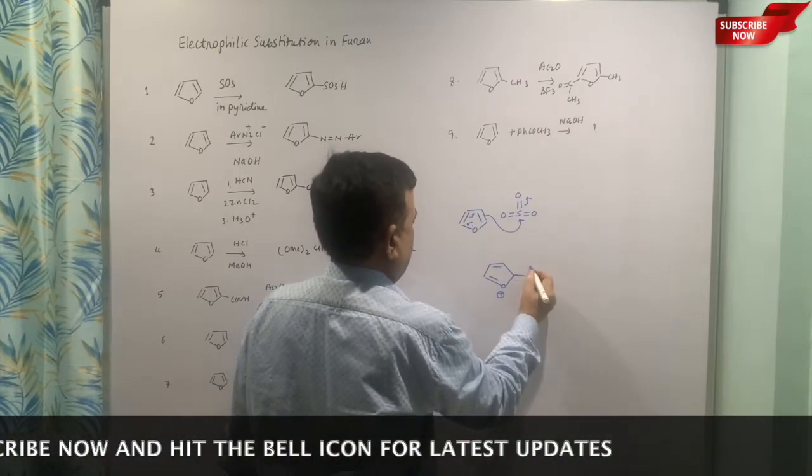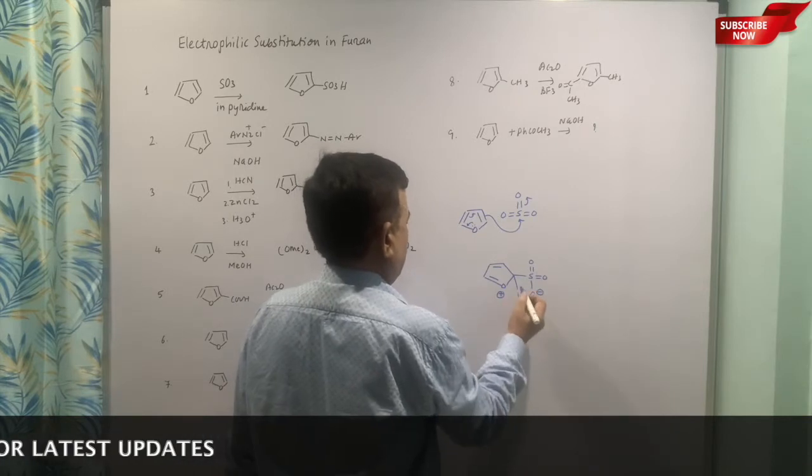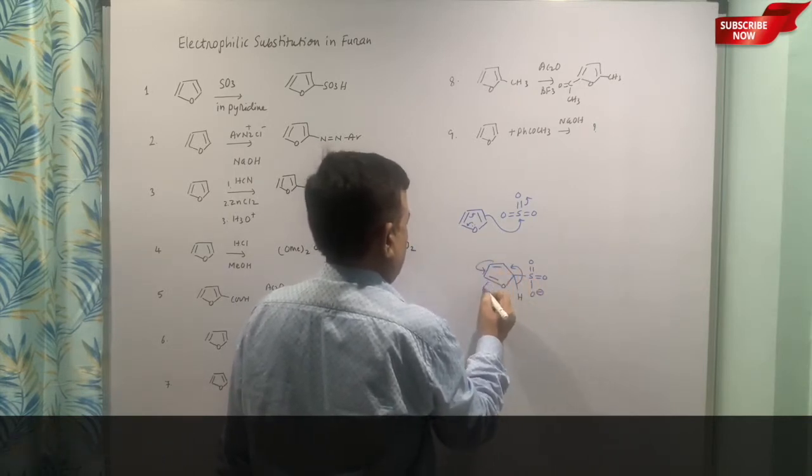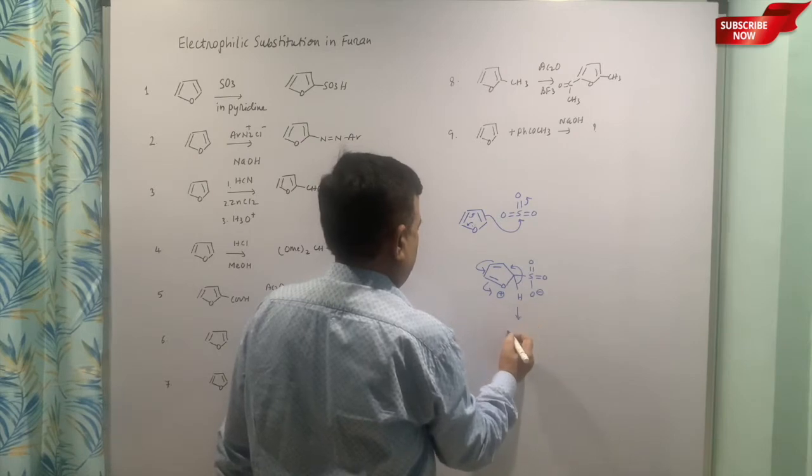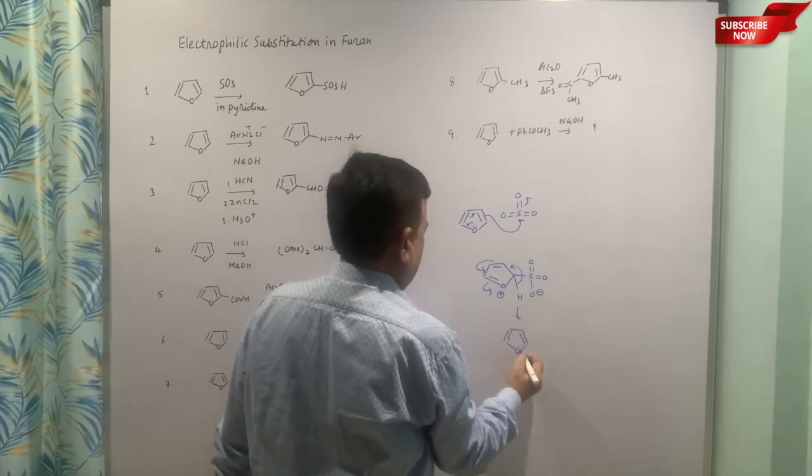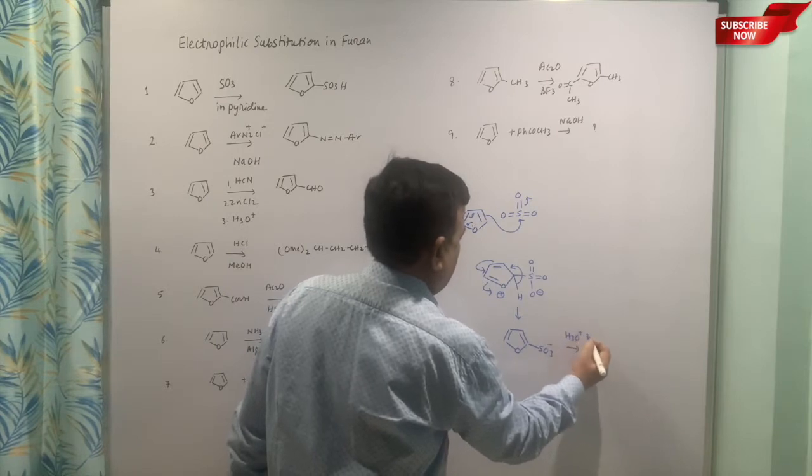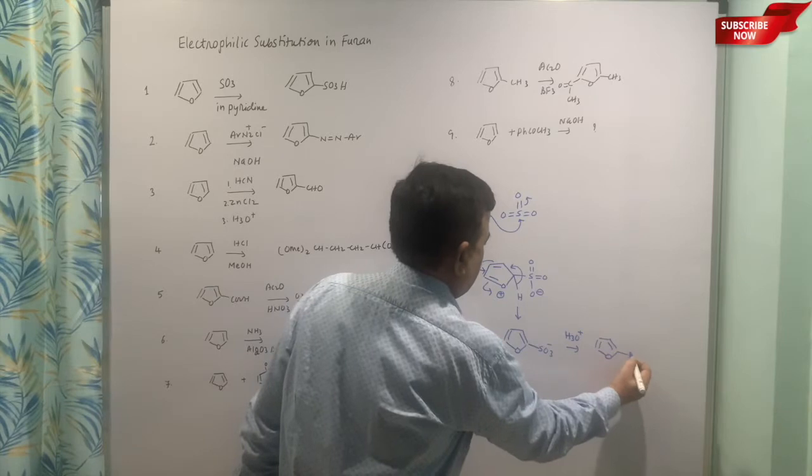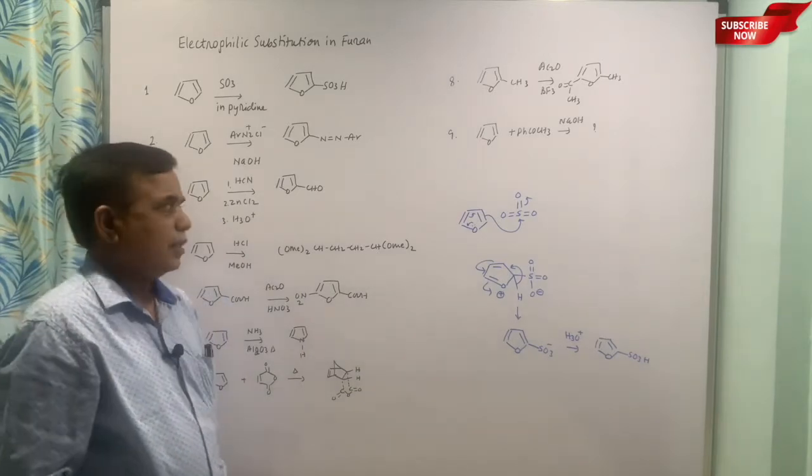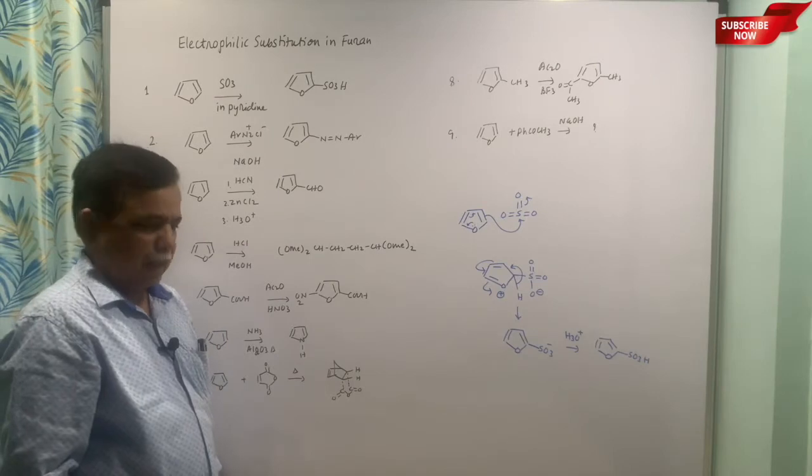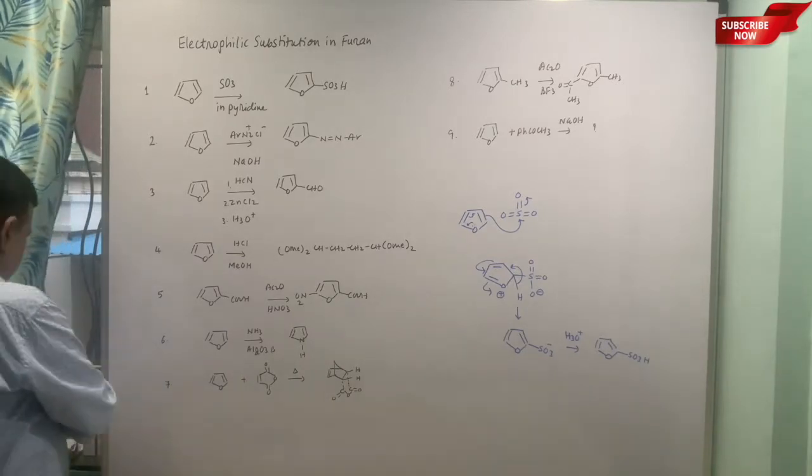So we can directly show the arrow and then it will be SO3 minus, and on workup it will take up a proton and you get sulfonic acid. We can't use strong reagent like sulfuric acid because this is labile to mineral acid, and that's why we use the mild reagent, that is sulfur trioxide in pyridine.